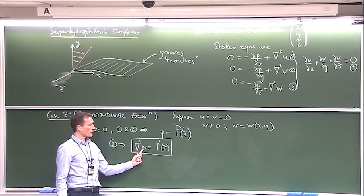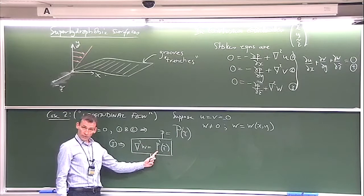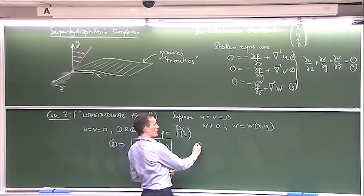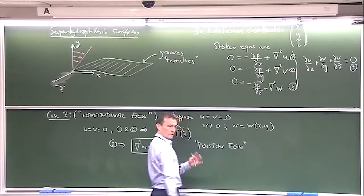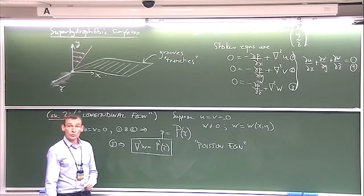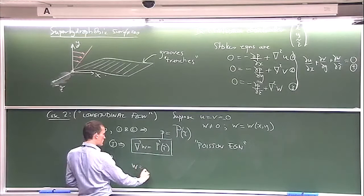That leaves us with equation three, which implies del-squared w equals P-prime of z-tilde. Notice the structure: this is the two-dimensional Laplacian operator in x and y, but on the right-hand side I don't have x and y — I just have z-tilde, so as far as this operator is concerned, it's a constant. This is an example of a Poisson equation — a forced Laplacian. And again, the reason I'm showing you this is because you can write down the general solution. There's a mysterious factor of 4 coming in, but you'll see why later.